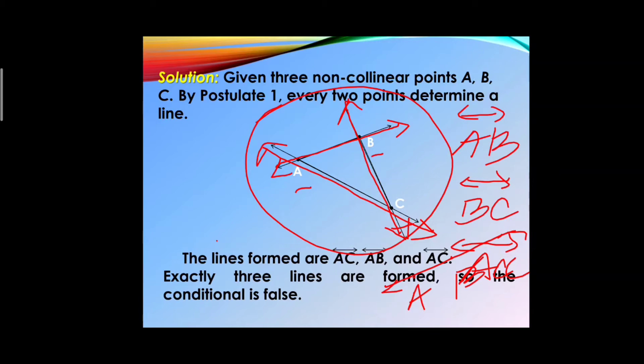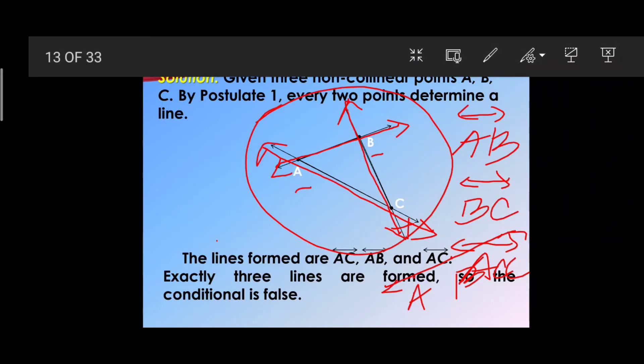The hypothesis is true and the conclusion is false, so the truth value of the conditional statement is false. This is how we provide a counterexample — by stating a postulate and illustrating it where possible.